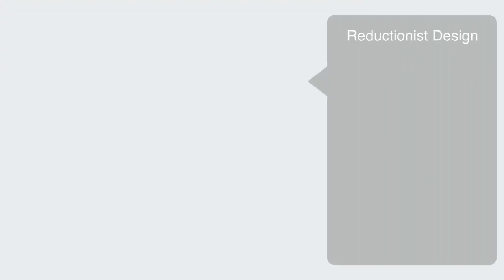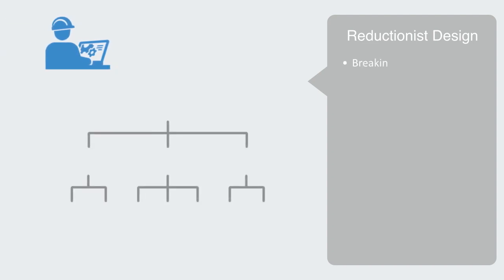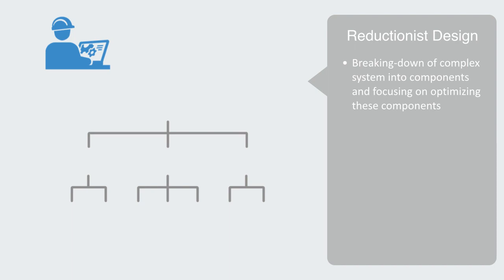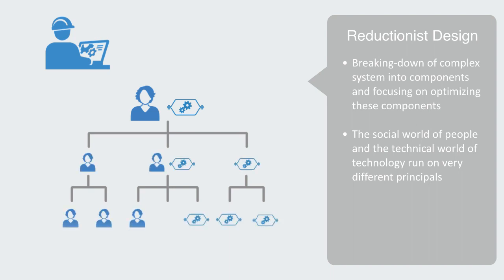Our traditional design and engineering practice is based upon the use of reductionism, which involves the breaking down of complex systems into components and focusing on optimizing these components in isolation. The social world of people and the technical world of technology run on very different principles, and often the first stage in this process of breaking a system down is the division between people and technology. So let's first think about how these two domains differ in their nature.